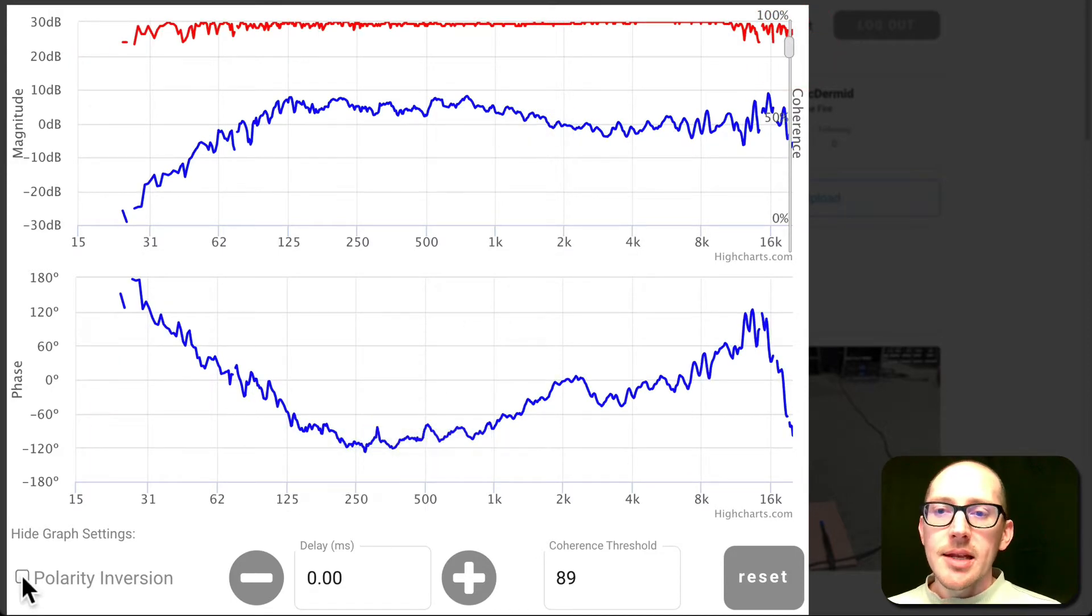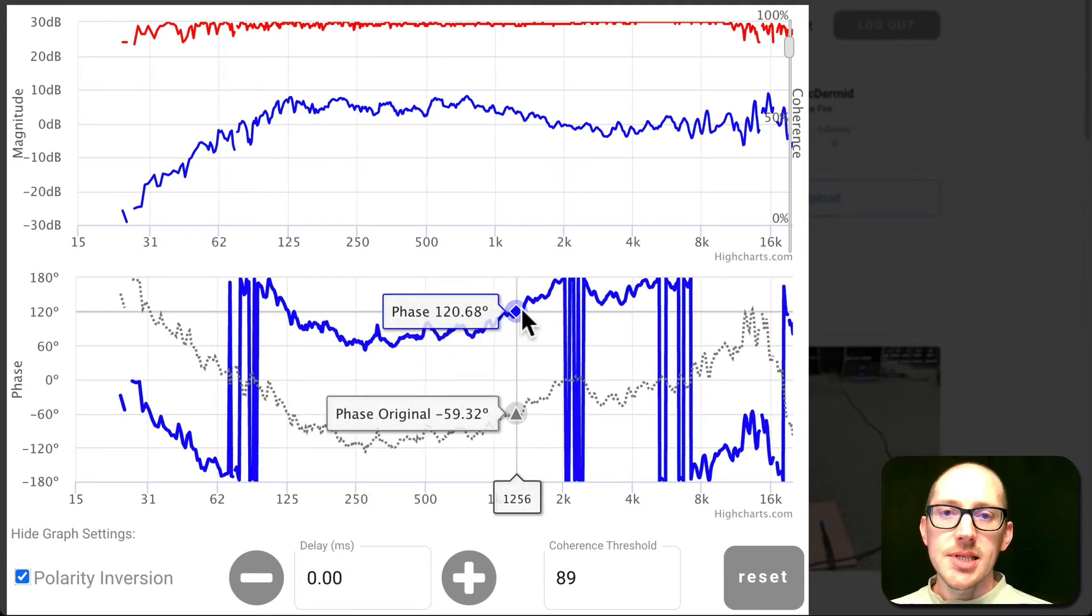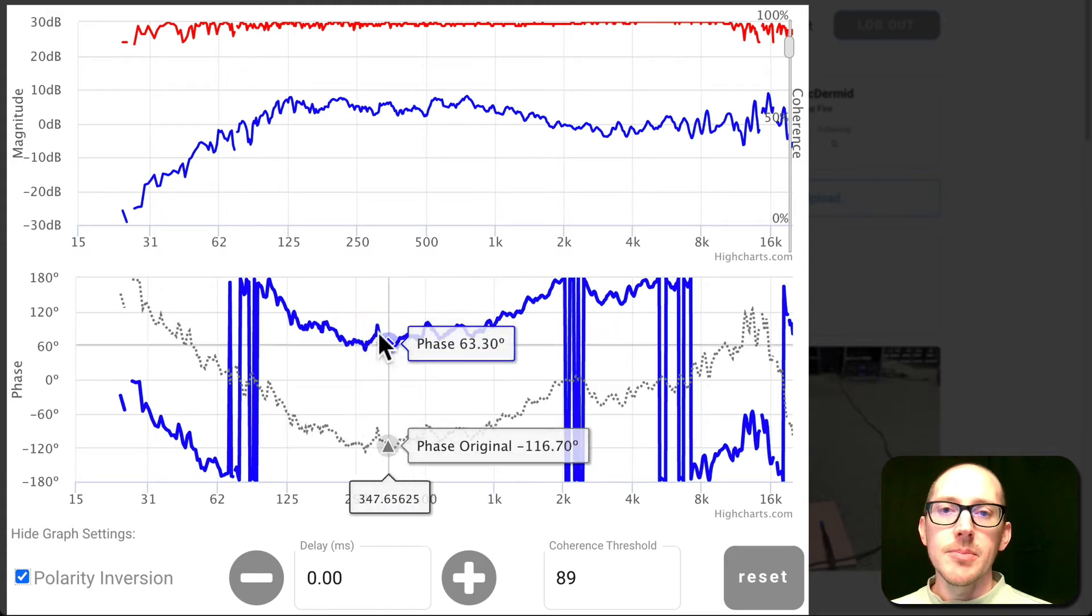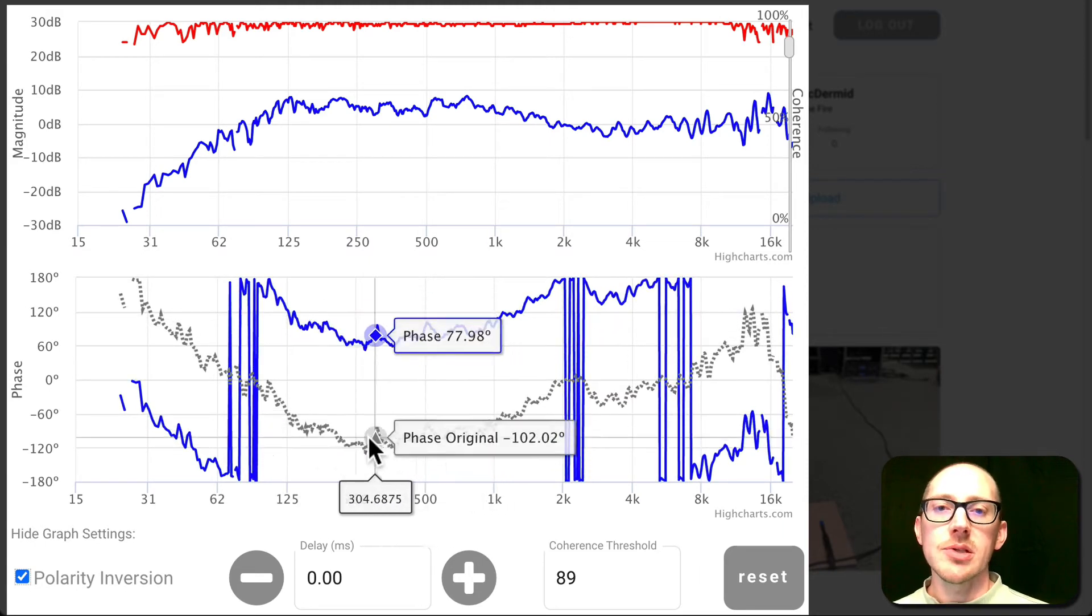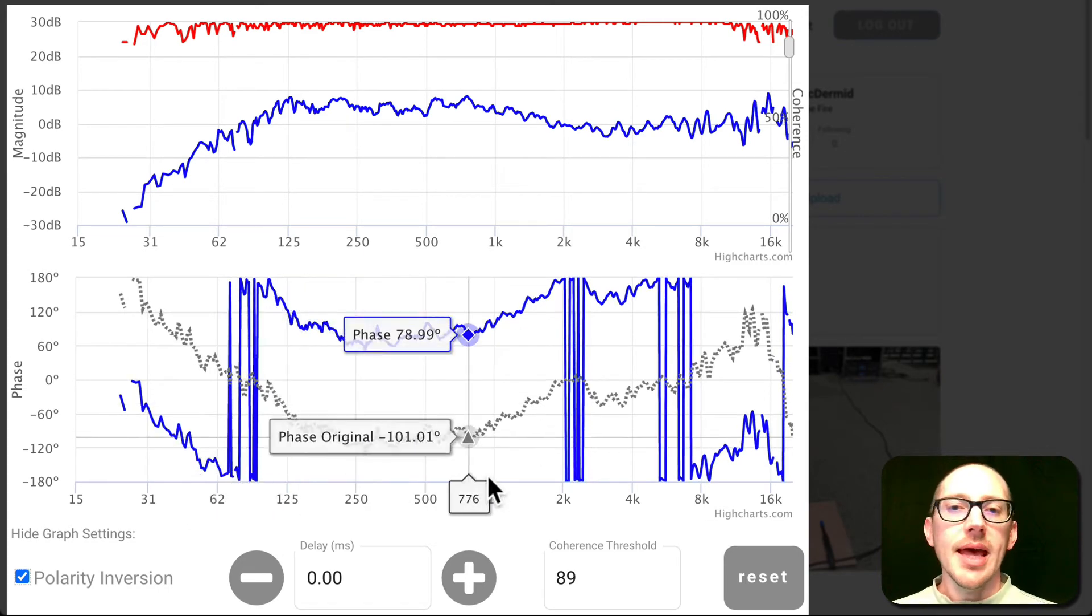We can invert polarity. As soon as you either invert polarity or add or subtract delay, you're going to see the new data in blue and the old data, the original data in gray. I did that because I found that without this, it was a little bit disorienting because as you can see,